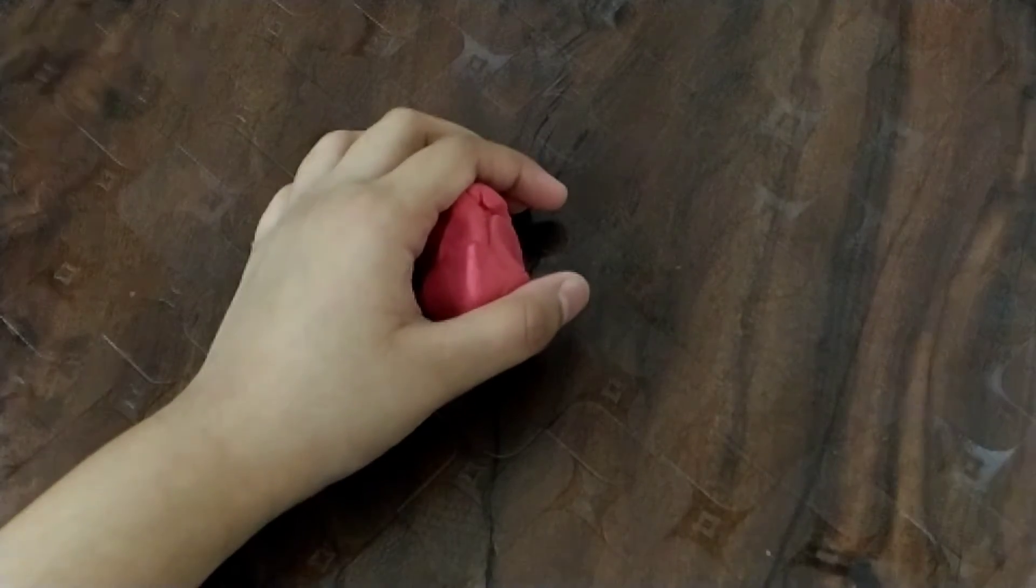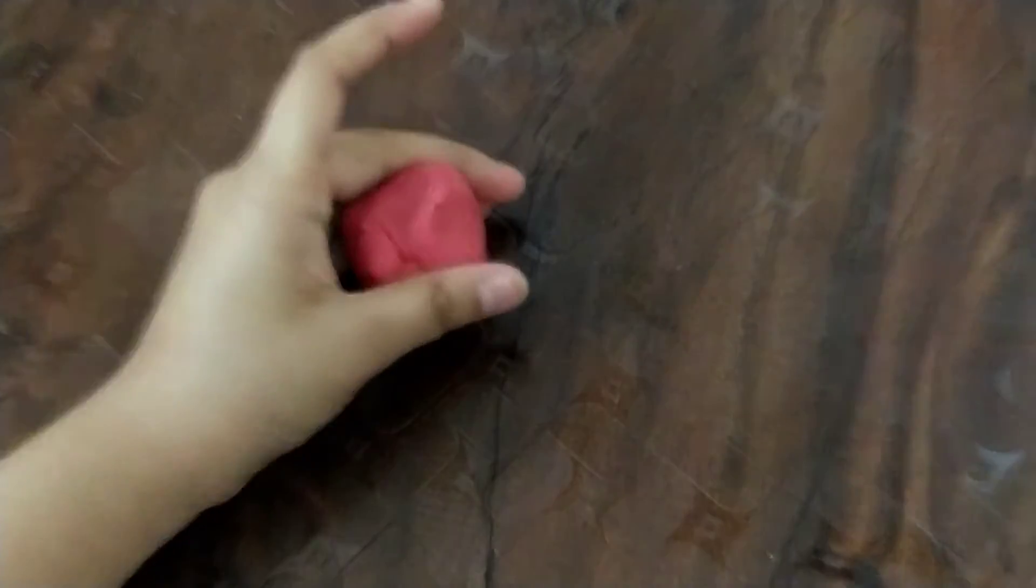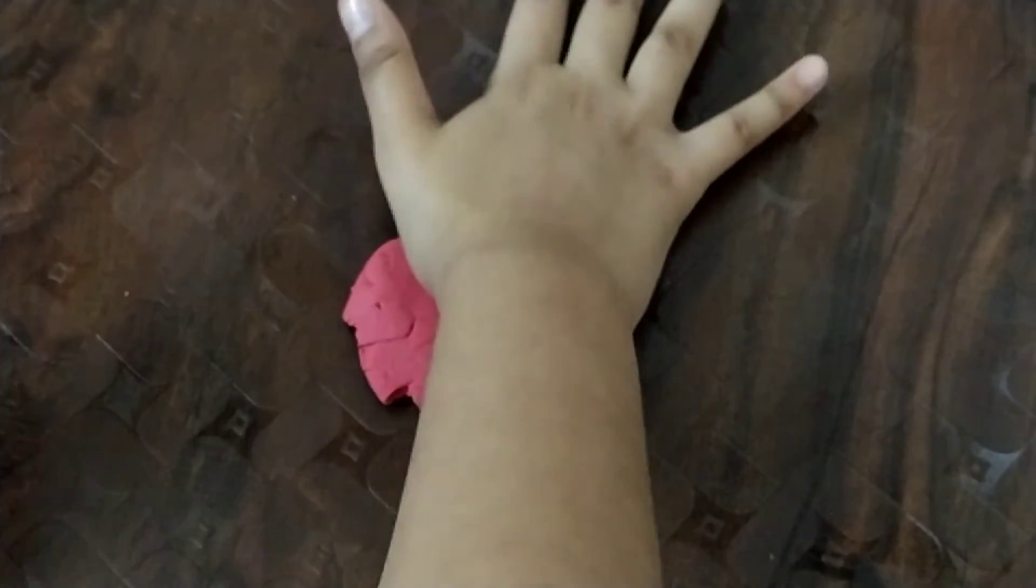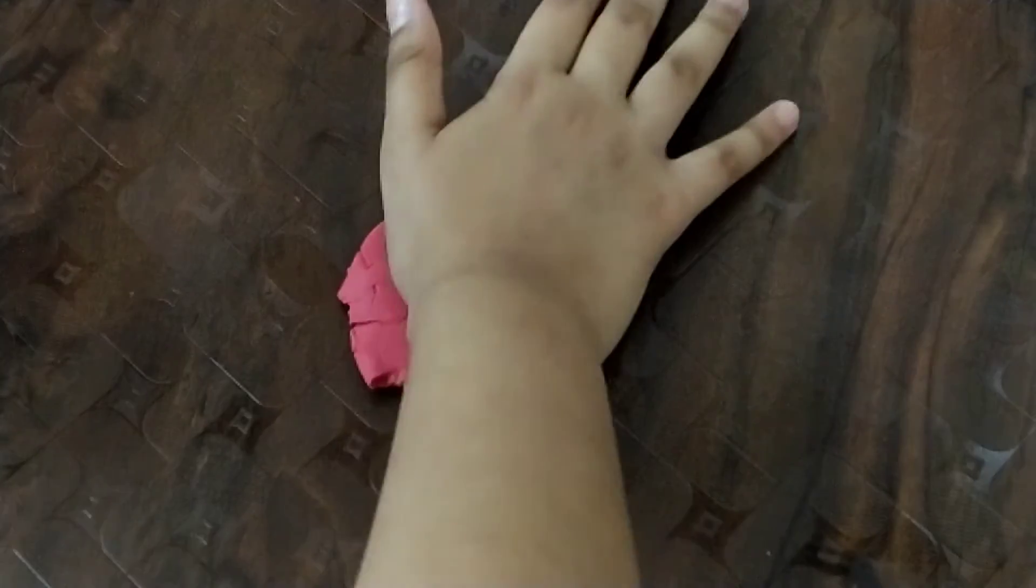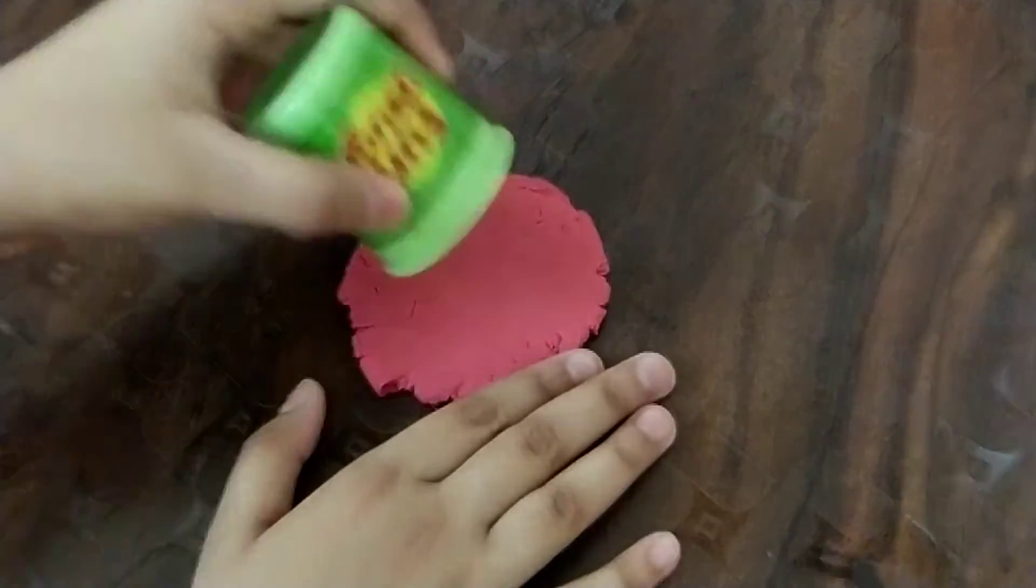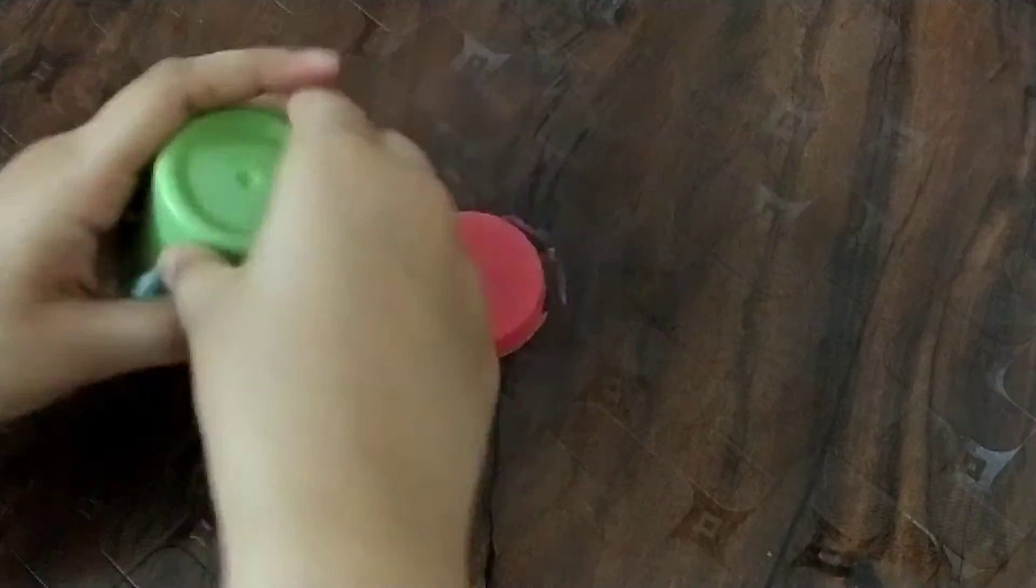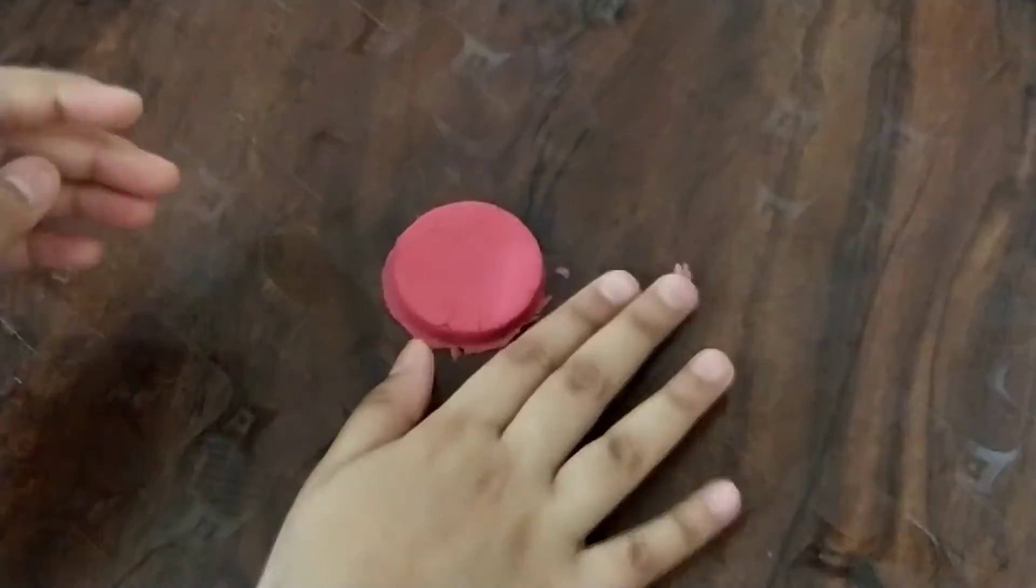Welcome to my YouTube channel. Today we are going to make a traffic light. Let's start. For making a traffic light, you need to take red clay, flatten it, and then cut it using a mold like this.